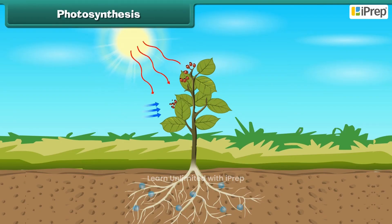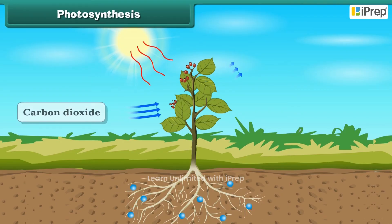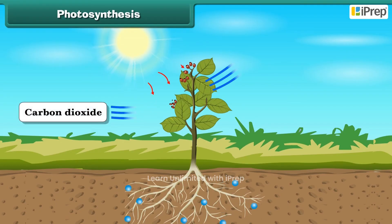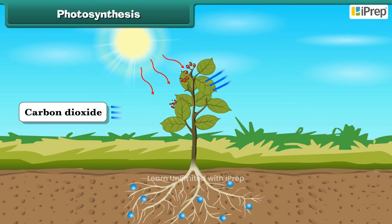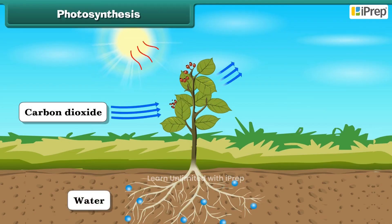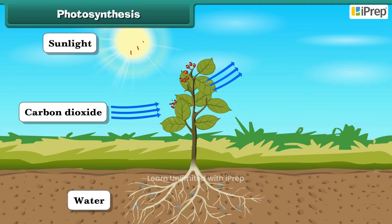Plants make food in their leaves by means of a process called photosynthesis. Leaves of a plant prepare food by converting carbon dioxide absorbed from air and water absorbed from soil into glucose, in the presence of sunlight.